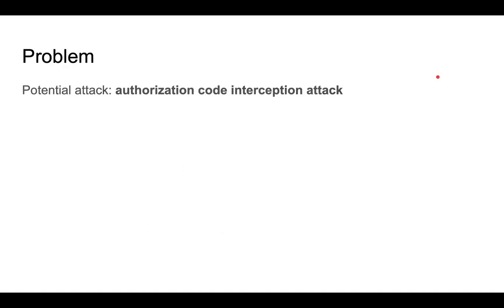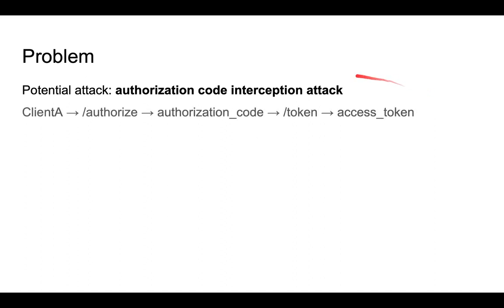The problem is called authorization code interception attack, which means that a code may be used by a wrong application. On a high level, there's client A sending an authorization request to the authorization endpoint of the authorization server. This server issues an authorization code. The client uses that code to exchange it at the token endpoint for an access token, and this access token is used to access protected resources.